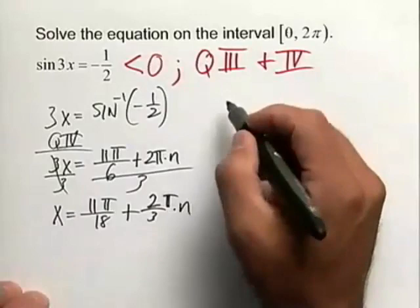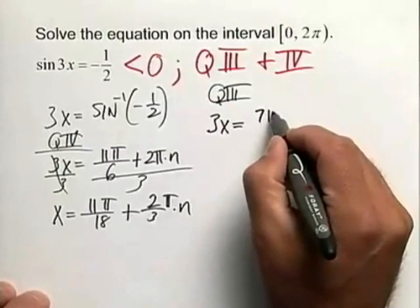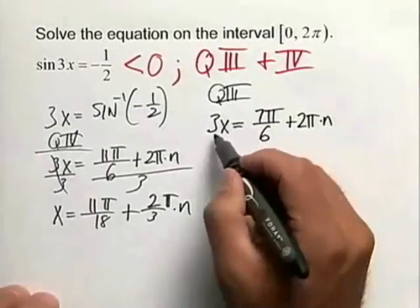Now let's think about quadrant 3. In quadrant 3, our reference angle is pi over 6. So we can also say that 3x is going to be equal to 7 pi over 6 in quadrant 3. Again, addressing the periodicity, we're going to add 2 pi n to that value.